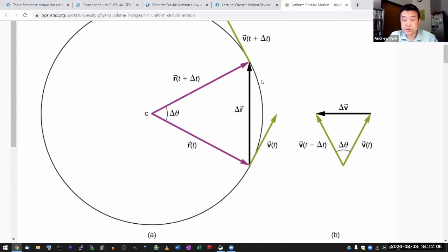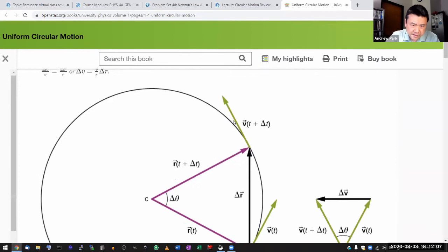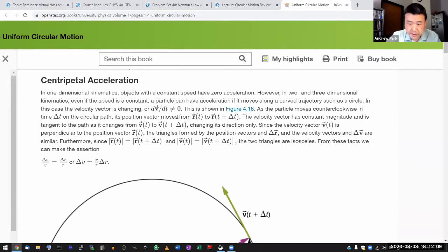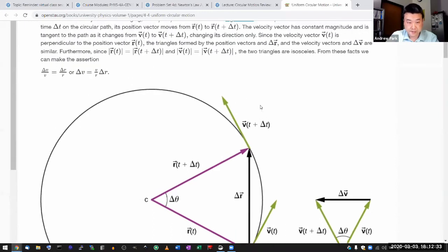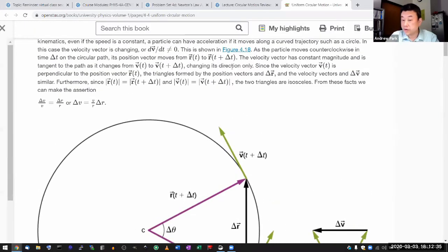So the velocity has changed and it's this figure here, part b, that's showing the change of velocity in terms of the geometric parameters here. If I read along you will see the position vector moves from r(t), the velocity vector has constant magnitude and is tangent to the path as it changes from v at time t here to v at time t plus delta t, changing its direction only.